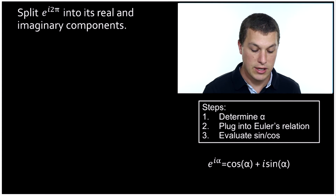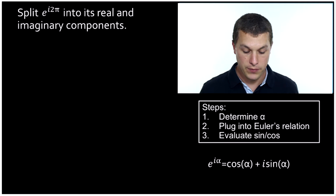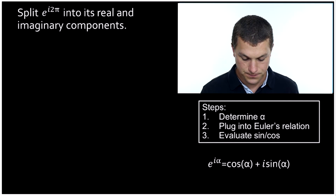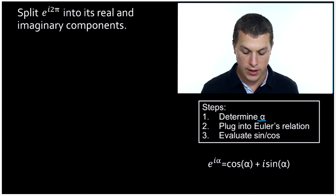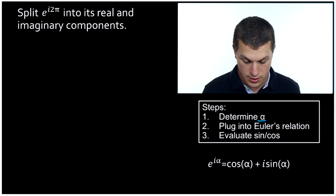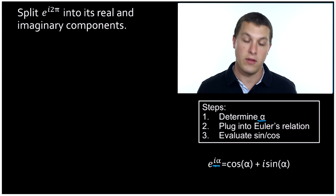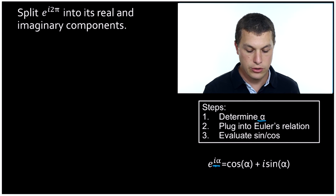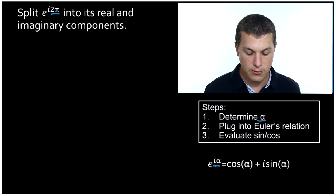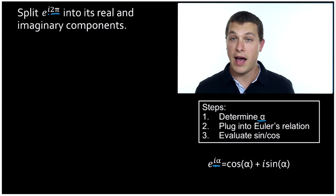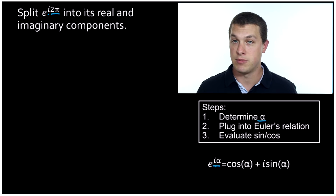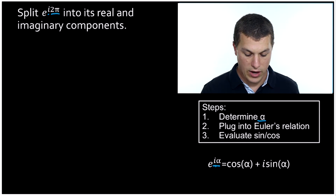We're going to start with e to the i two pi. The first thing we want to do is determine what alpha is. In Euler's relation, alpha is just whatever is in your exponent besides the letter i. So if we look at our equation, we have two pi and we have i. Two pi is our alpha because it's the other stuff up there besides i. So alpha is equal to two pi.